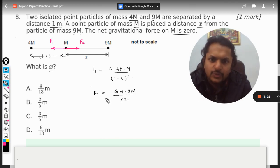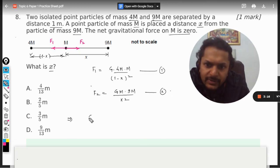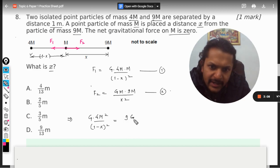As per F2 is concerned, it will be G times 9 times m squared divided by x squared.